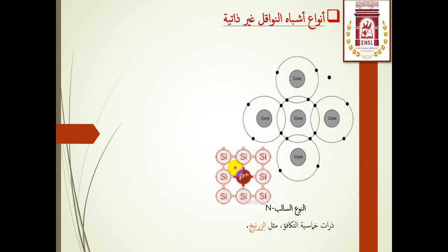فيصبح الفوسفور أيون موجب P+ ويكون هو الذرة المانحة، أي أن الشائبة الخماسية التكافؤ شوبت في شبه الموصل ومنحته إلكترونا زائدا. يتحرك هذا الإلكترون الحر وينتقل من ذرة لأخرى ويساهم في عملية التوصيل الكهربائي وزيادة الناقلية. أما الأيون الموجب P+ فهو مرتبط ولا يشارك في عملية التوصيل؛ فقط الإلكترون الزائد هو الذي يساهم في زيادة الناقلية الكهربائية.